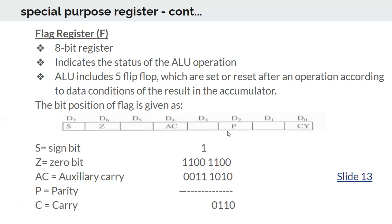For the parity bit: suppose the microprocessor adopts odd parity. If the result has four ones — an even number of ones — the parity bit is automatically set to 1 in order to make the total number of ones odd.